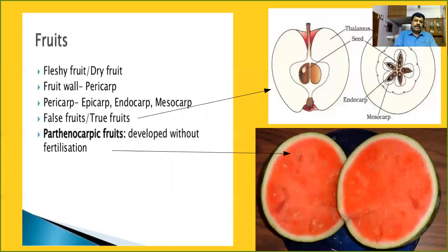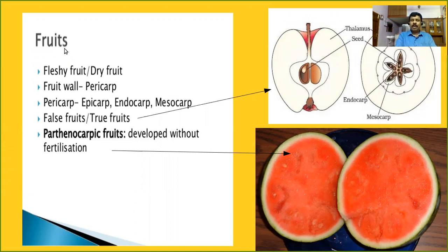The second concept to learn is the fruit. Fruit is also a product of sexual reproduction. The ovary must be converted into fruit, and the ovules must be converted into seeds. The ovary wall should be converted into fruit wall.